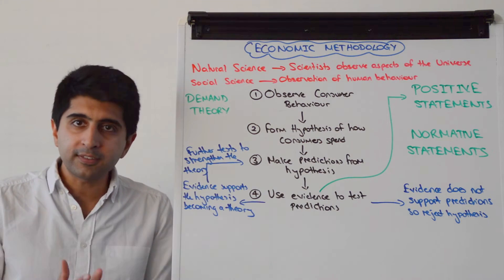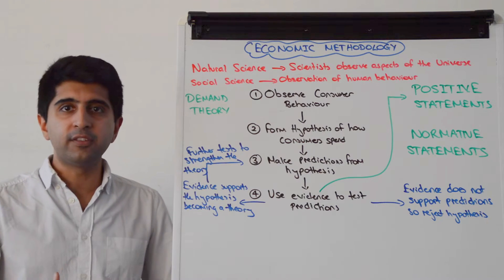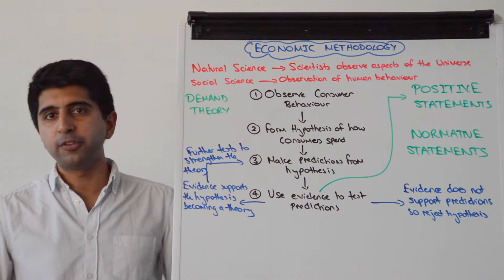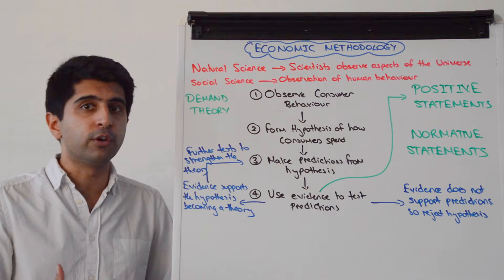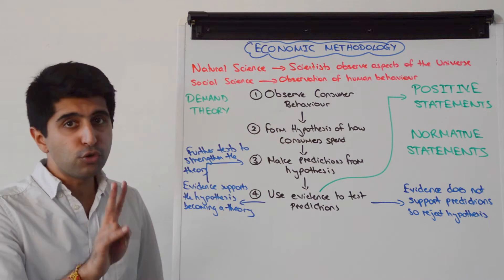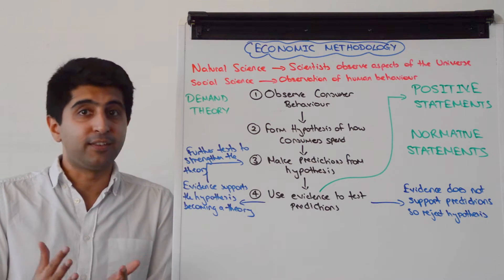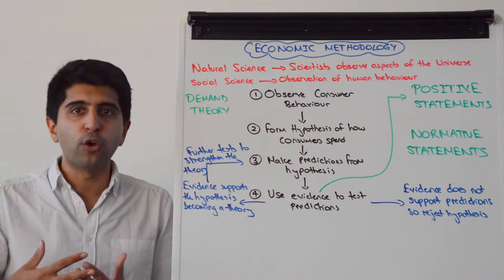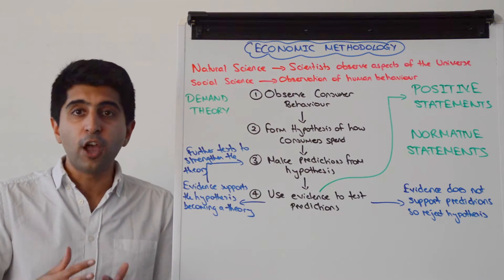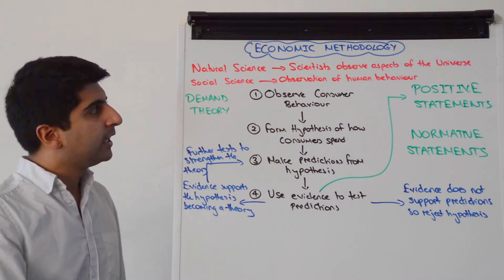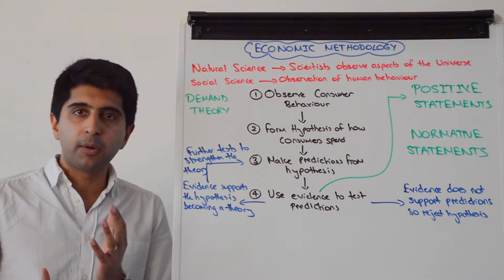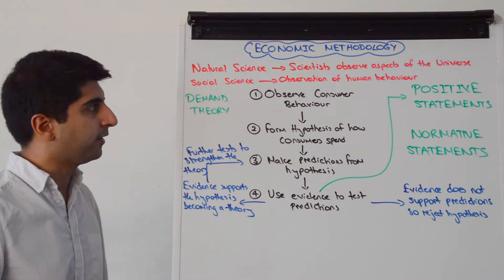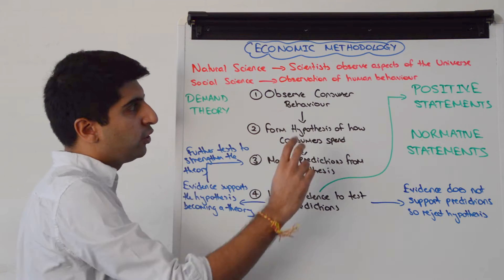Economics is a study of human behavior and choices that humans make. Theories are then made based on the observations that economists see in the real world. But crucially, it's still a science. It's a science because we test all of our observations and all of our theories. So it's still correct to say that economics is a science, but it's a social science, not a natural science, because we study human behavior.